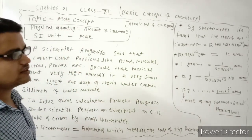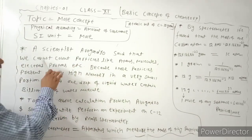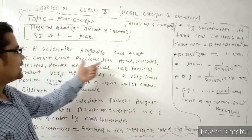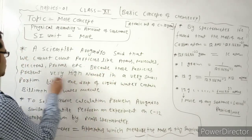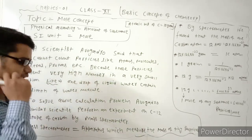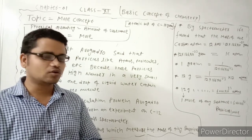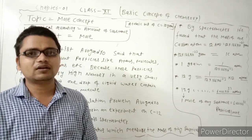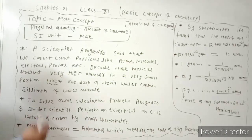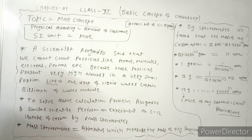Avogadro was a scientist who played a very important role in the mole concept. He said that we cannot count particles like atoms, molecules, electrons, protons, etc., because these particles are present in very high numbers — they are very small portions. In a small portion, there are billions of particles. One drop of liquid water contains billions of particles, so counting exact numbers of molecules is very difficult.